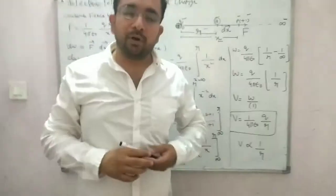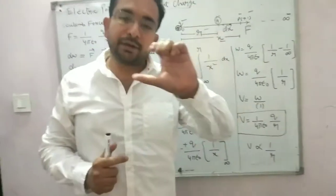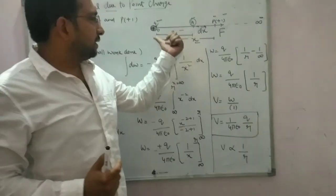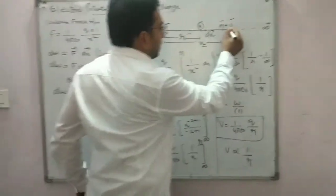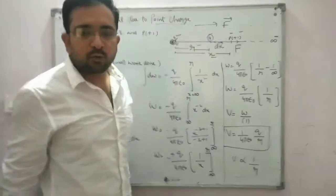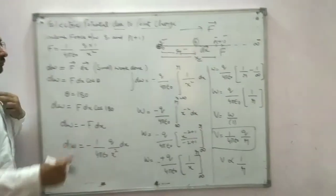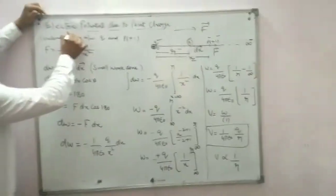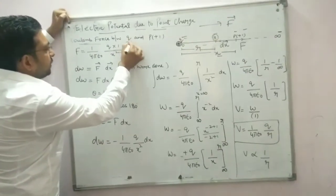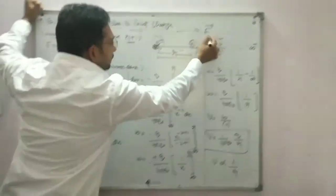The electric potential value depends on the distance. We have a unit positive test charge at distance x. There is a force acting on it. The potential due to point charge comes from the Coulomb force between Q and the unit positive test charge.